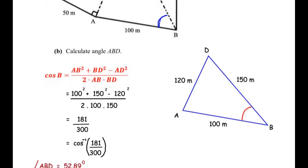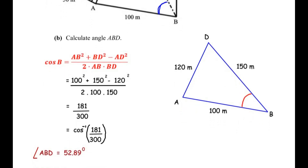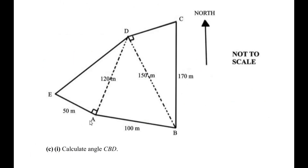So angle ABD equals 52.89 degrees, rounded to two decimal places. Now let us move on to sub-question C, which has two parts. The first part: calculate angle CBD.